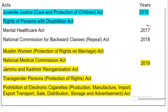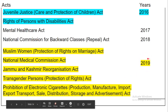Mental Healthcare Act was passed in 2017. National Commission for Backward Classes Re-organisation Act was passed in 2018. Muslim Women Protection of Rights on Marriage Act, National Medical Commission Act, Jammu and Kashmir Reorganisation Act, Transgender Persons Protection of Rights Act, and Prohibition of Electronic Cigarettes Production, Manufacture, Import, Export, Transport, Sale, Distribution, Storage and Advertisement Act — these five acts passed in 2019.